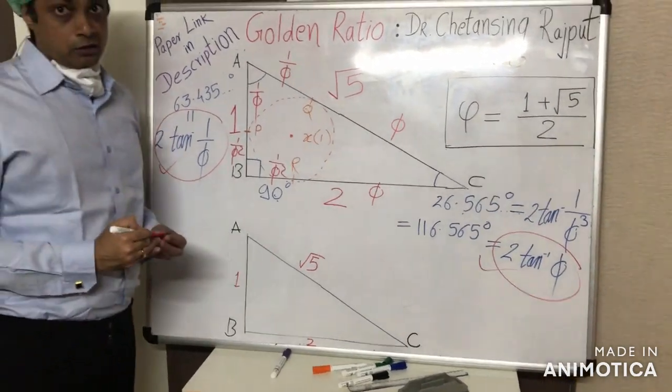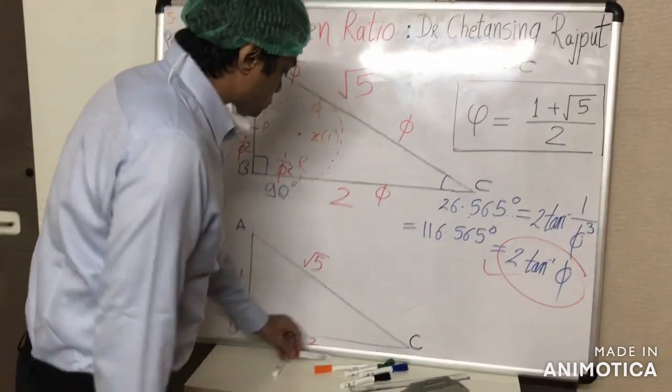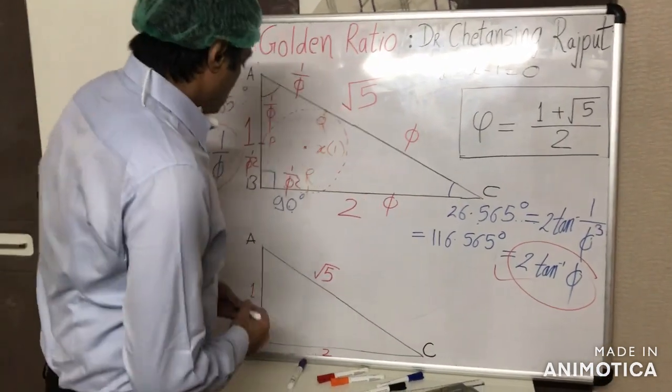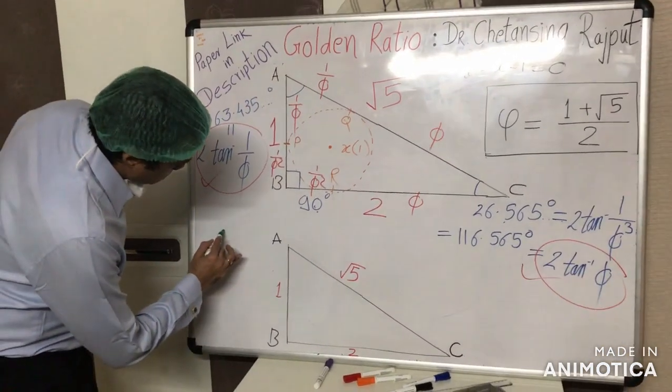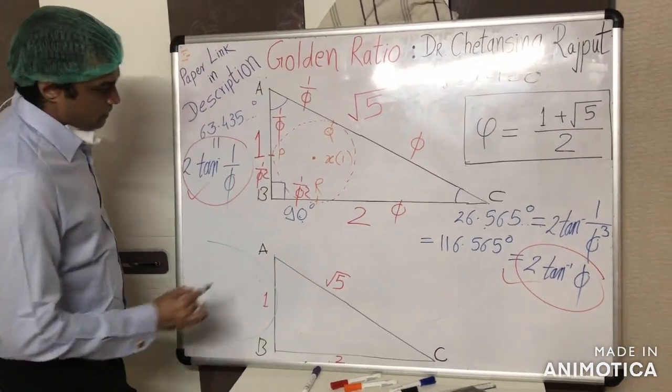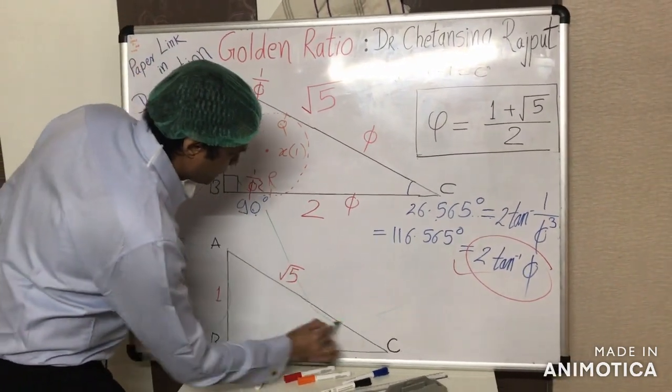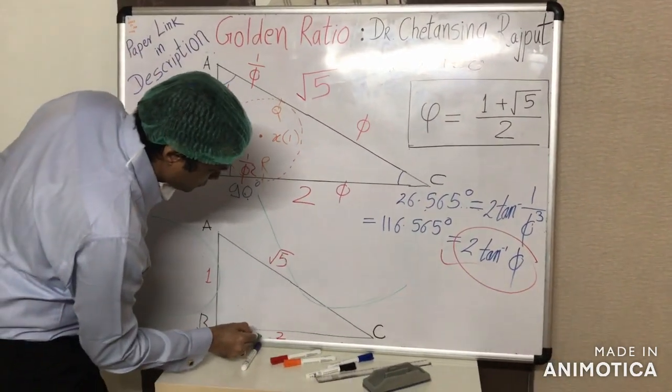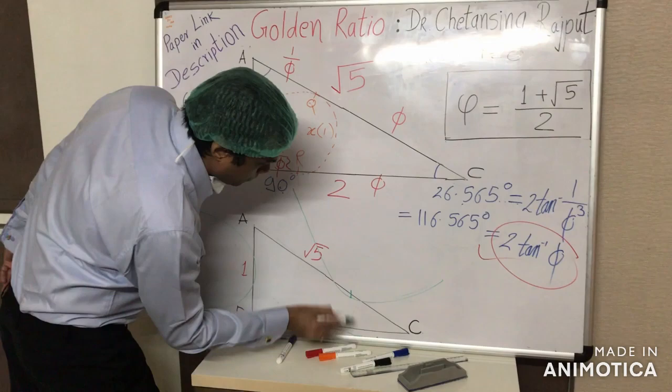And not just the incircle, even the excircles of the triangle. Like this is one excircle, this is second excircle, and this is third excircle.